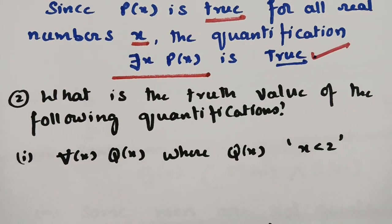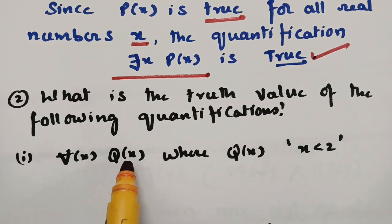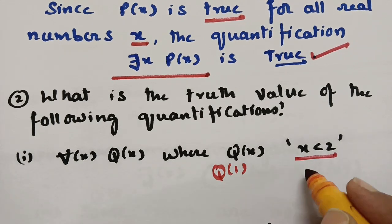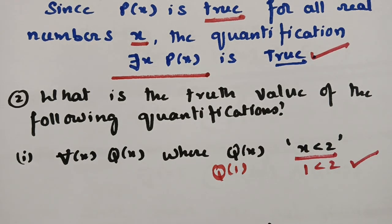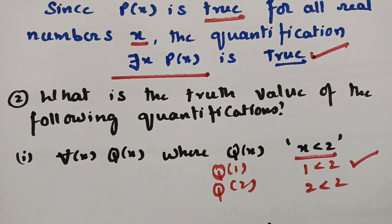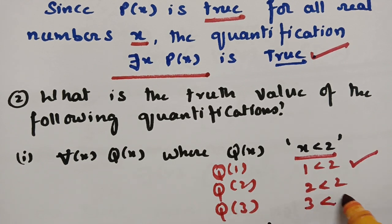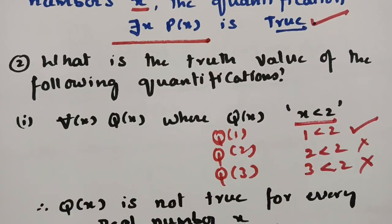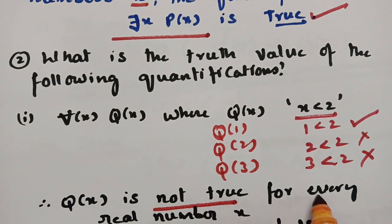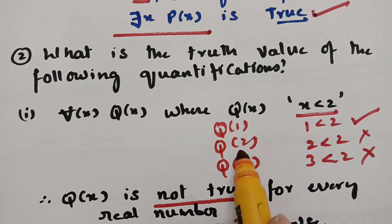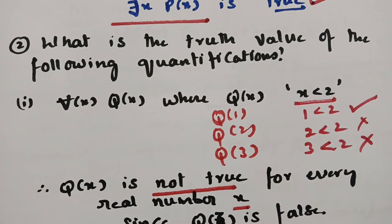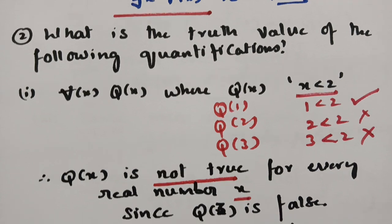What is the truth value of ∀x q(x), where q(x) is x < 2? If x = 1: 1 < 2 — true. If x = 2: 2 < 2 — this is a wrong statement. If x = 3: 3 < 2 — also wrong. Therefore q(x) is not true for every real number x. Since we found a false case, ∀x q(x) is a false statement.